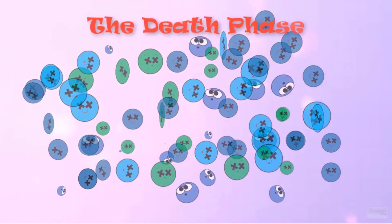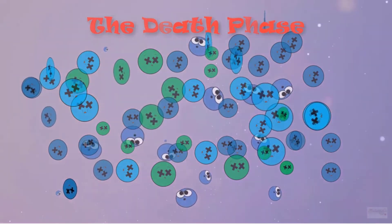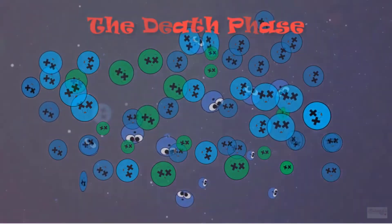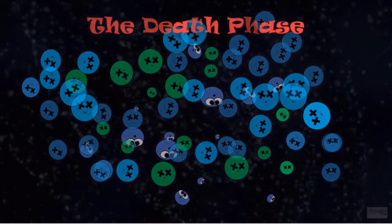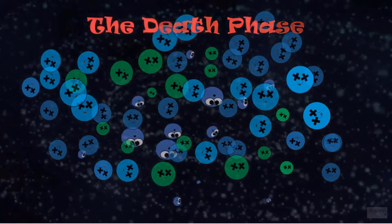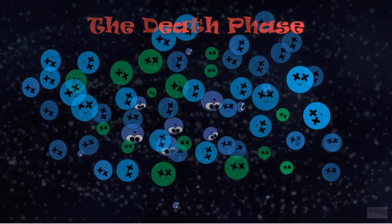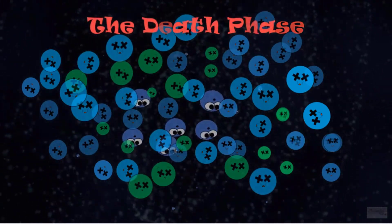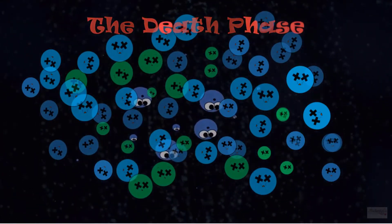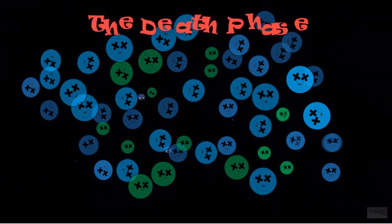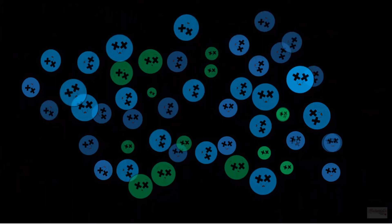After some time, the depletion of nutrients and dwindling amount of free space, along with the buildup of toxins in our cell culture, will cause more cells to be dying than are being produced. This gives us the death phase of our bacterial growth curve. After some time in these conditions, you will eventually see that all of the cells in the cell culture will die.